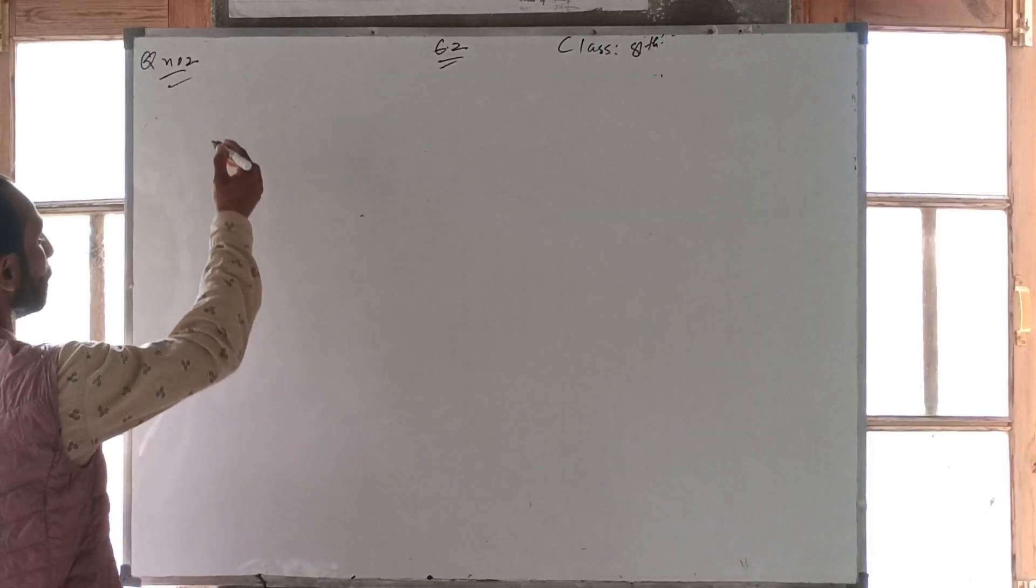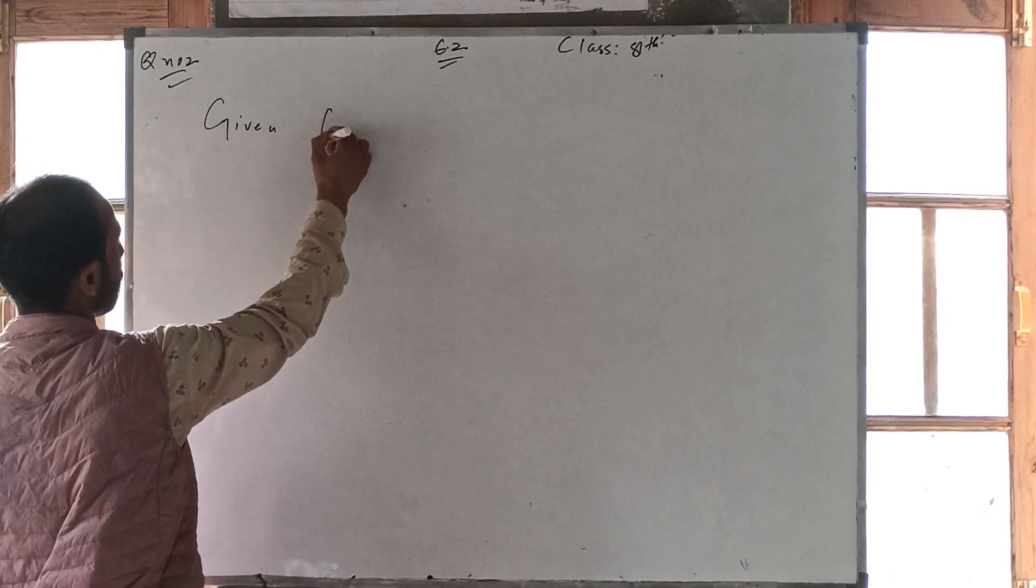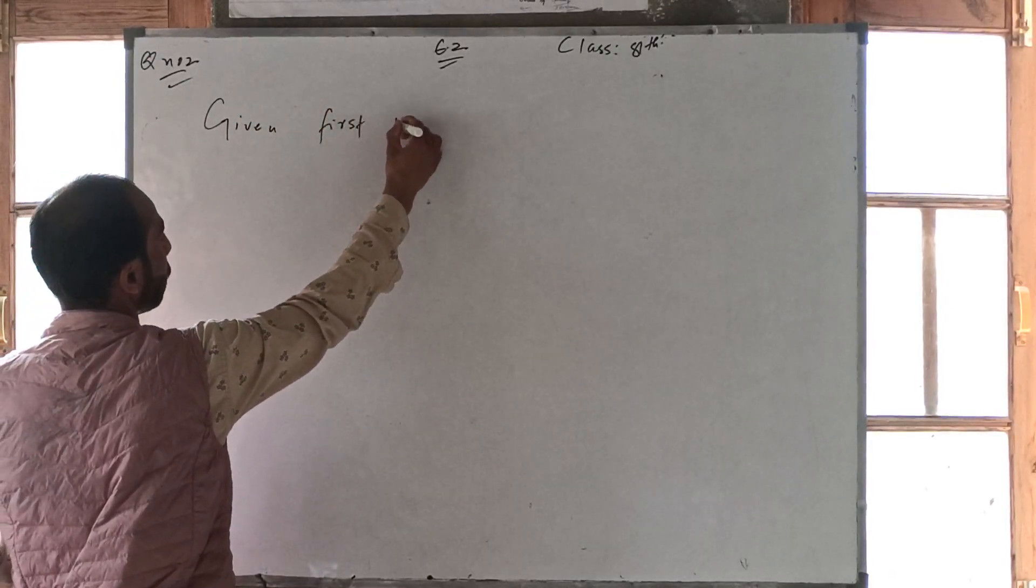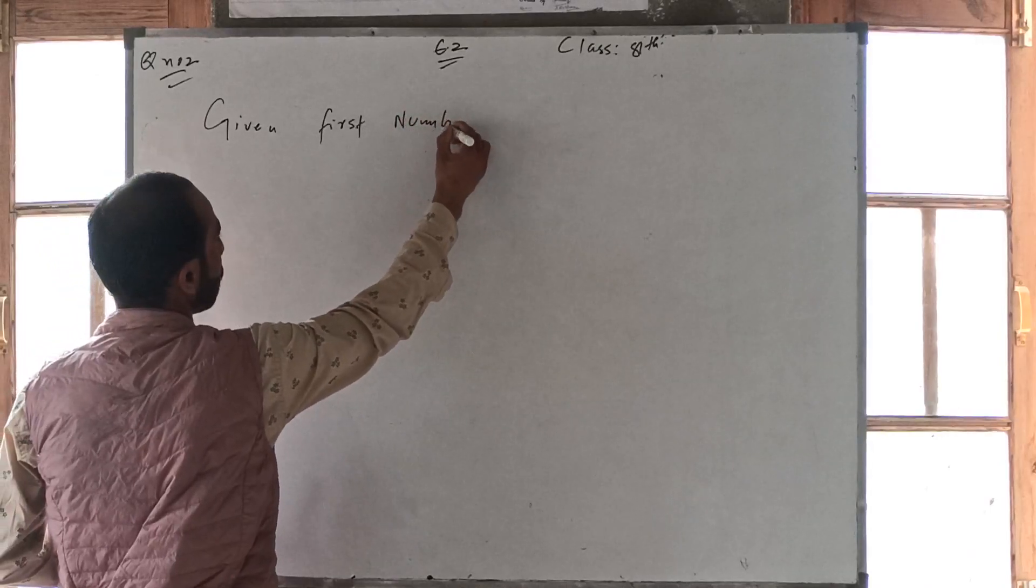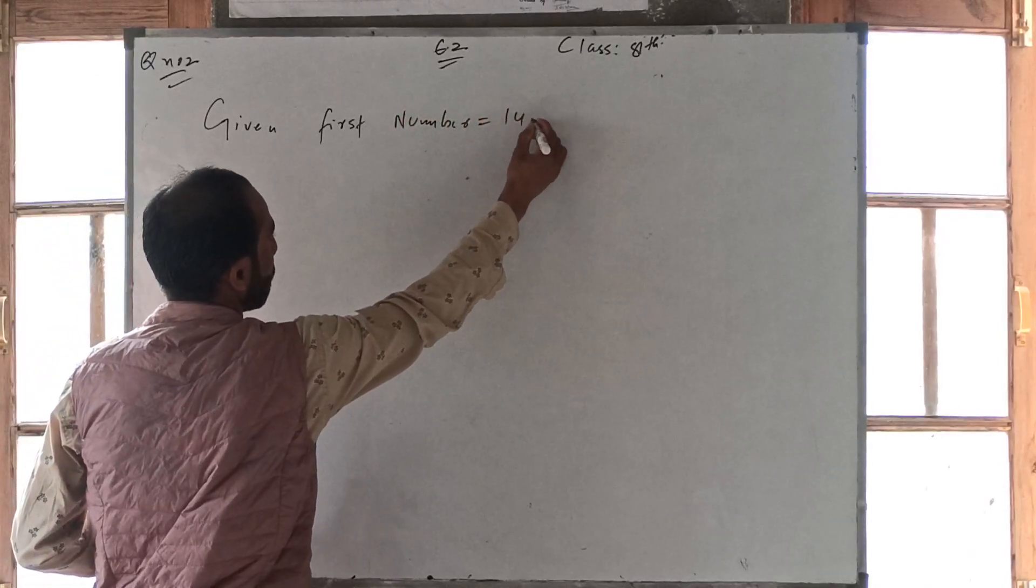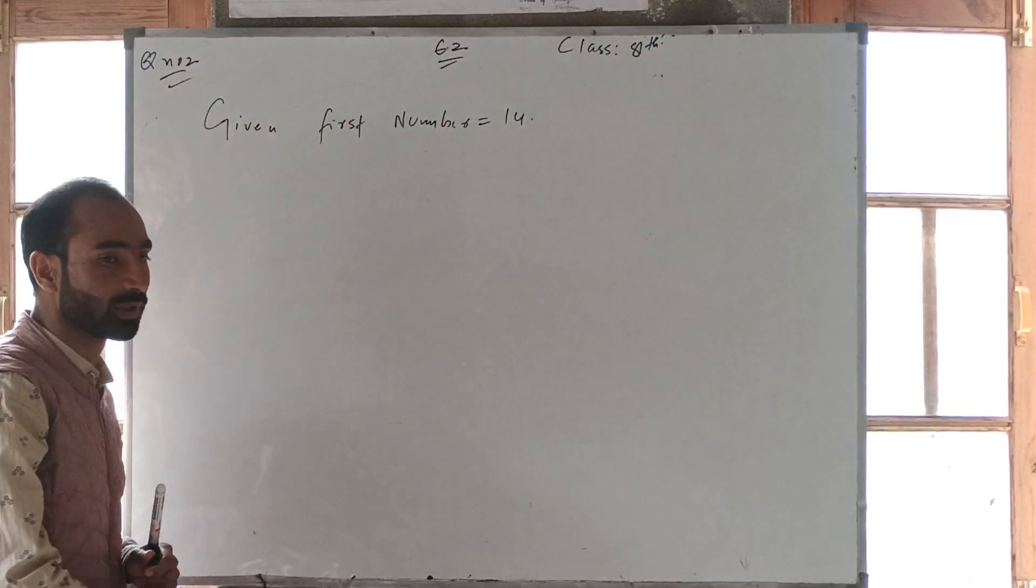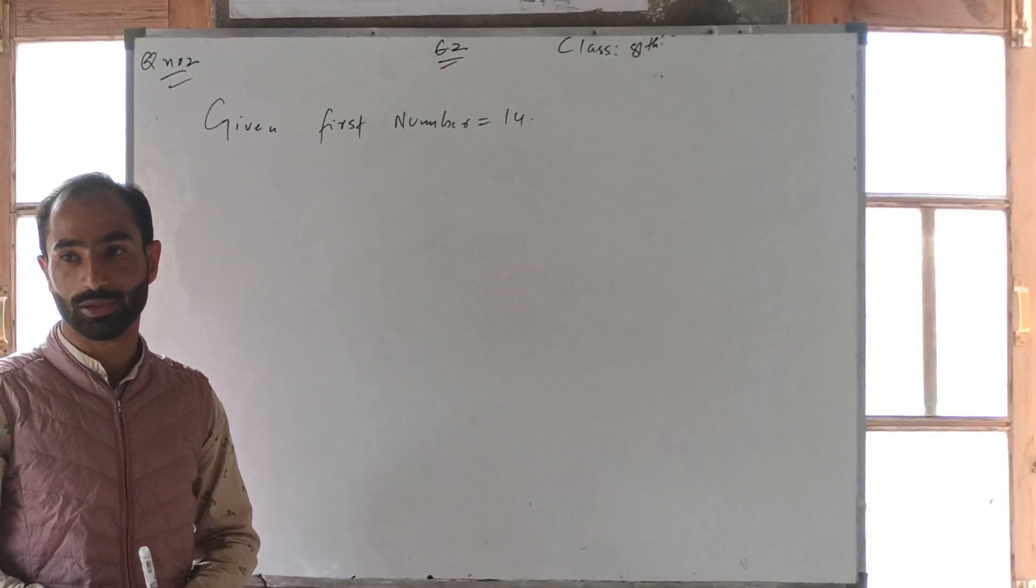So, here is the given. What is the first number? First number is 14. What will we take the Pythagorean triple? 3 numbers are to take them.